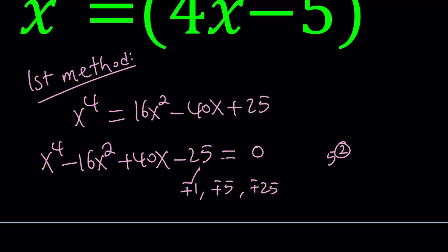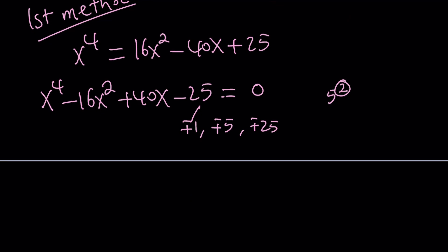But, one thing to always keep in mind in polynomial equations, that one thing you should always check, is the sum of the coefficients. What do I mean by that? So, let's go ahead and add these coefficients. The coefficient of x to the fourth is 1. The coefficient of x squared is negative 16. The coefficient of x is 40. And the coefficient of the constant term is negative 25. If you add these numbers up, you're going to notice that it's 41 minus 41, which is 0.